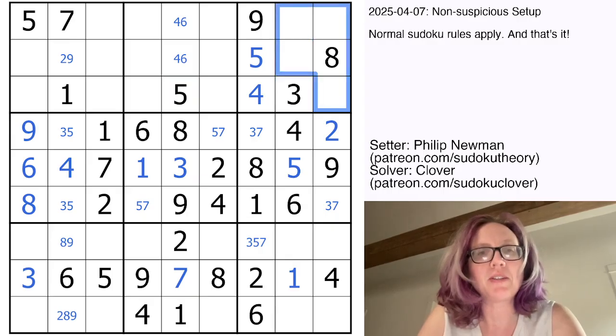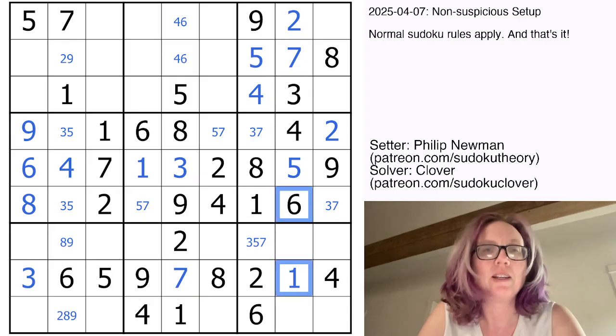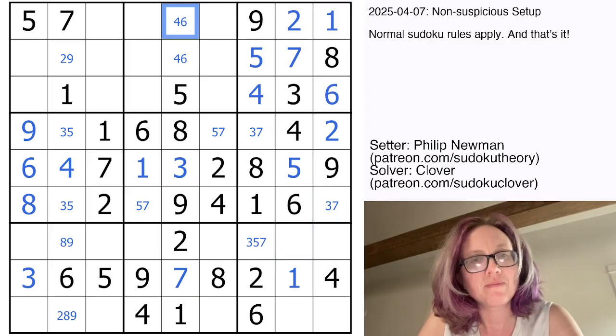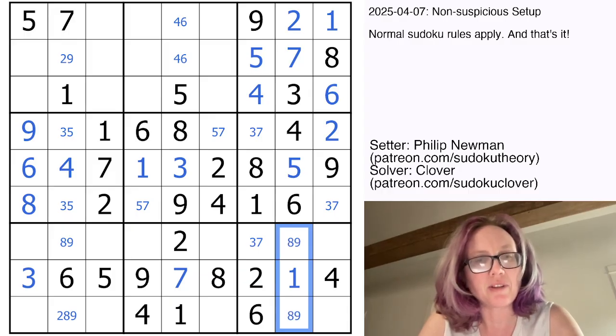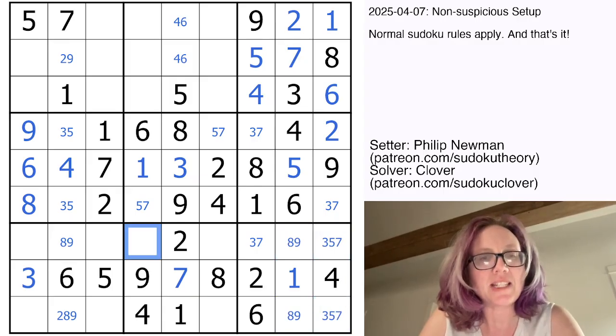And now in this region, I still need a 1, a 2, a 6, and a 7. So these are going to have to be my 2 and 7, because I have a 1 and 6 in the column already. And then I can place a 1 and a 6 here. This is no longer a 5. In these two cells, I need an 8 and a 9 to finish off this column. And here I need a 3, a 5, and a 7.